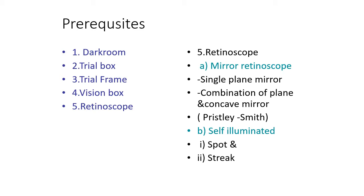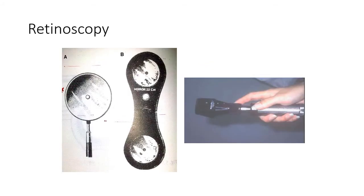When you visit the ophthalmology OPD, you will find all these things. We have a mirror retinoscope — a single plane mirror — and a combination of plane and concave mirror called Priestley-Smith. There are also self-illuminated retinoscopes: spot and streak types. These are the two types of self-illuminated retinoscope. With a self-illuminated retinoscope you can have a vertical or horizontal slit, or spot retinoscopy.